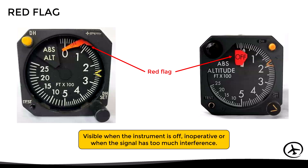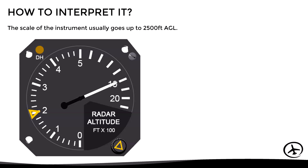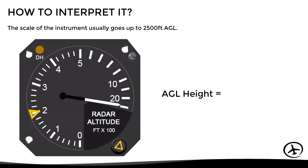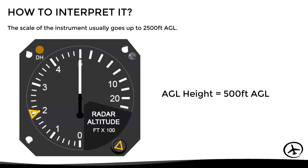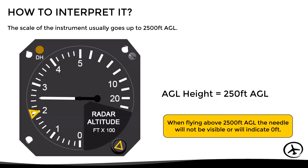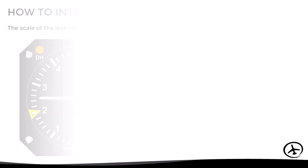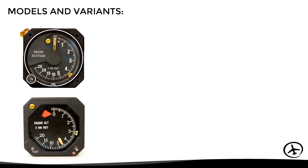Let's now see how to read this instrument. The scale usually goes up to 2500 feet. For example, in one position it would be indicating a height of 1000 feet; in another position, 2500 feet; here 500 feet; and here 250 feet. Normally when flying above 2500 feet above the ground, the needle will not be visible or it will return to the zero feet indication. This will depend on the manufacturer and model, as this instrument has many variants, both analog and digital.